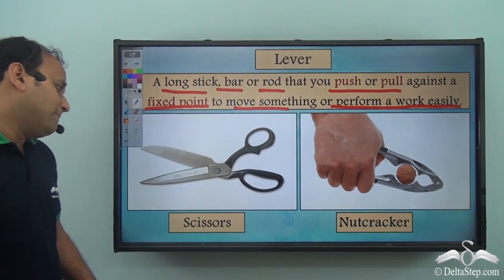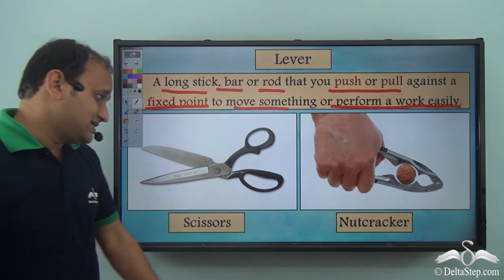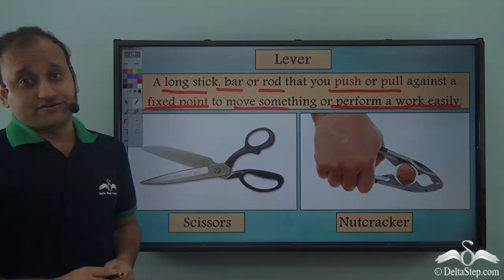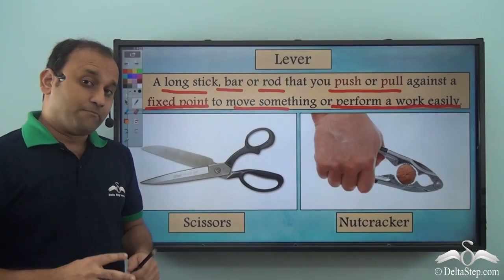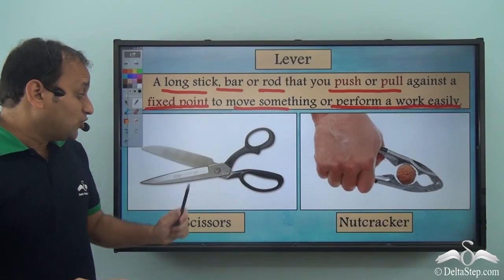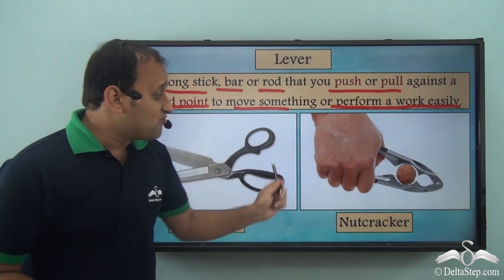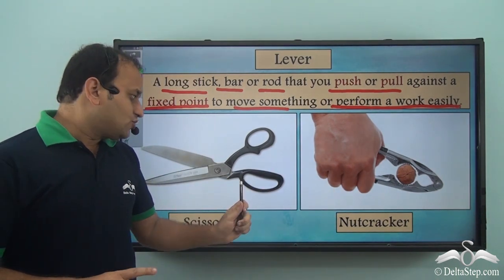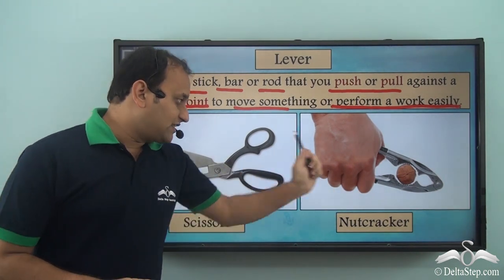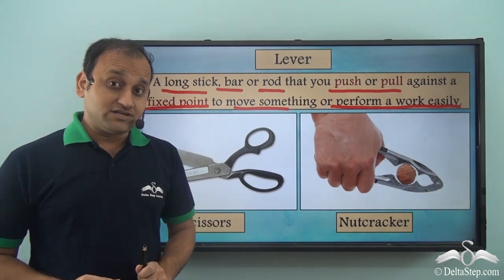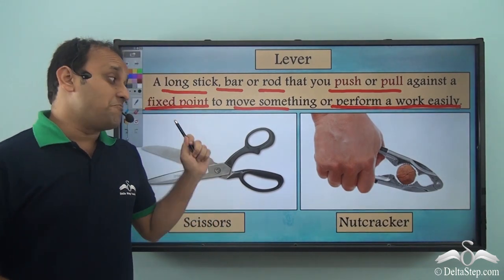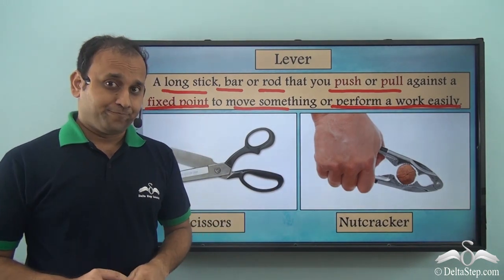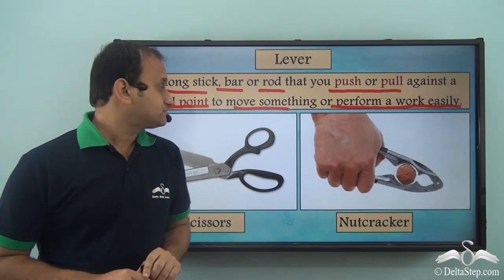Both scissors and nutcrackers are levers because both of them move about a fixed point, but even though both of them are levers, they have a major difference between them. So let's see what that is.